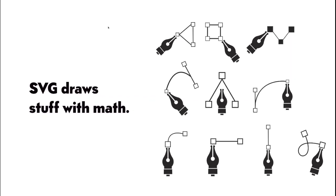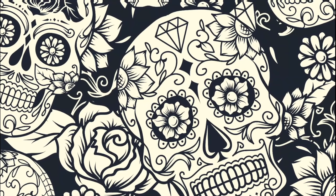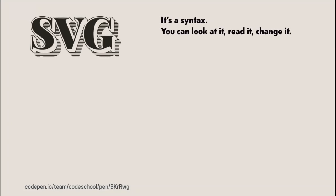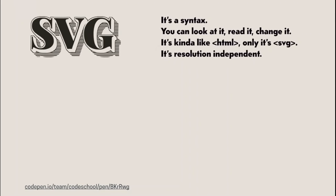We can look at a picture like these day of the dead masks and intuitively know it's vector artwork — put the pen down, draw a curved line, draw a straight line, pick up the pen, draw a different shape. That's the fundamental part of SVG. It's a syntax you can look at, read, change, understand, and manipulate. It looks a lot like HTML — there are angle brackets, attributes, and values — but it's SVG, not HTML. It's similar though.